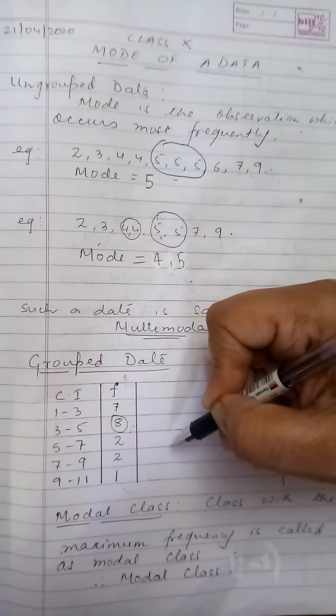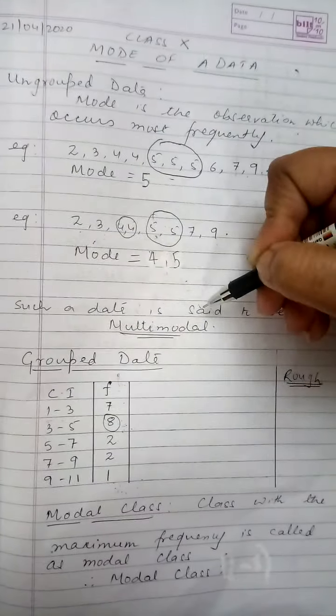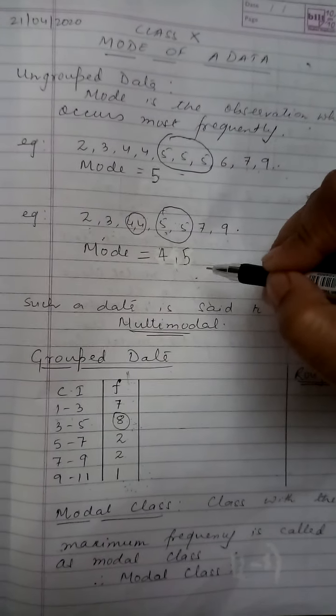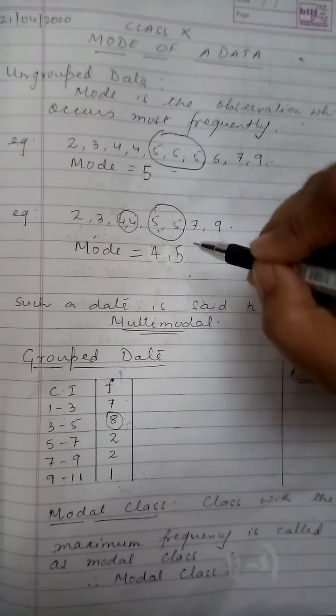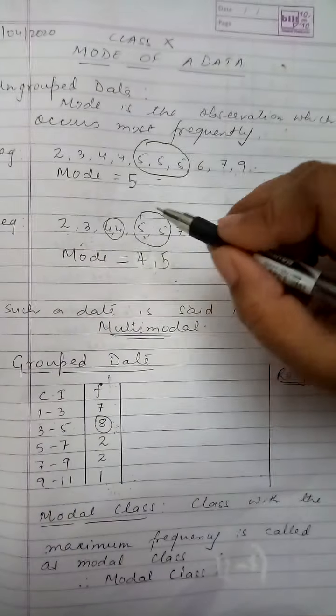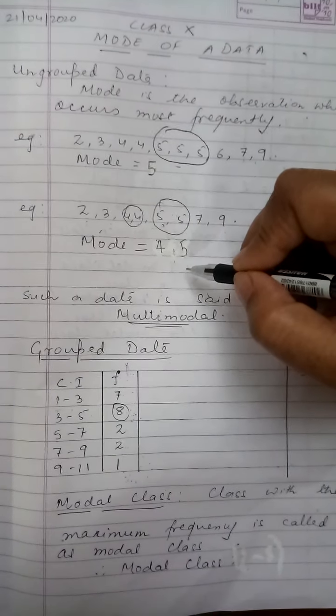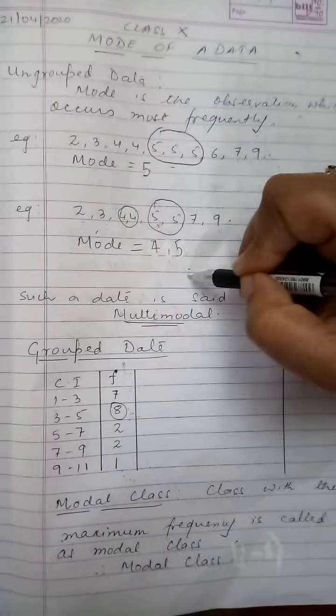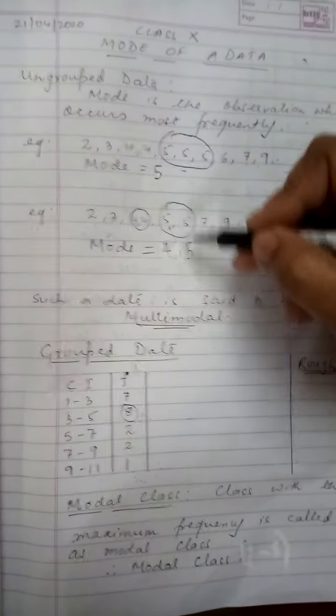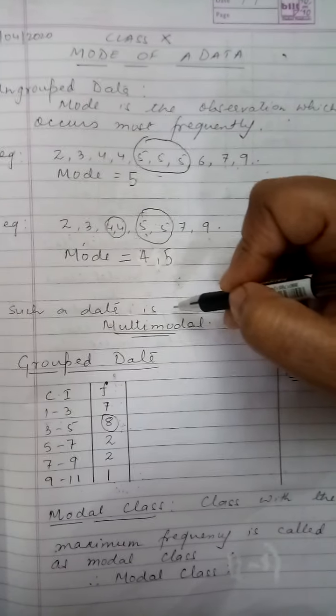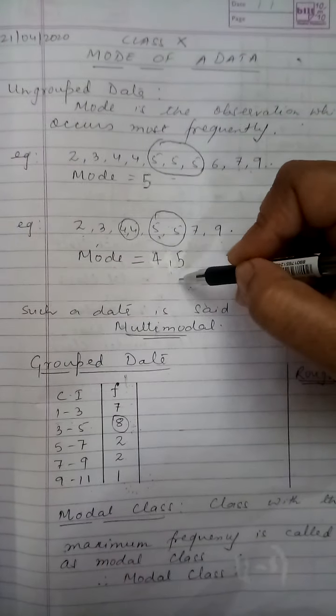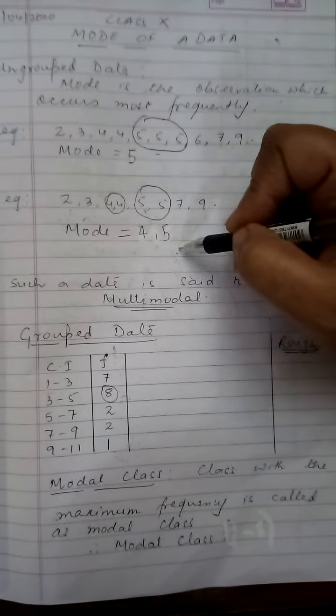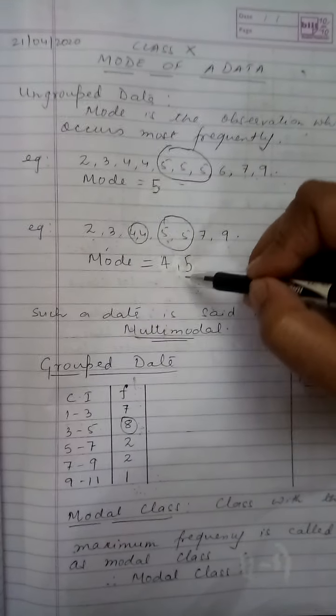Now before I proceed to the grouped data, the question is why do we require mode and is it applicable in day-to-day life? Yes it is. I'll give you a very simple example. When you go to buy your shoes or your dresses you will observe that for a particular size like extra large or a very large size of a shoe or a sandal you don't get much of a variety. The reason is the shopkeeper knowingly or unknowingly is using mode. After the sale of a few months he analyzes his sale and then he sees which size of the shoes or the dress sells the maximum and when he goes to buy his next lot of things he buys that size which gets the maximum variety.